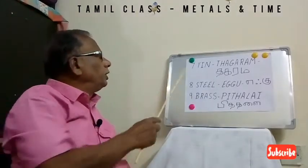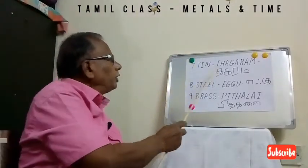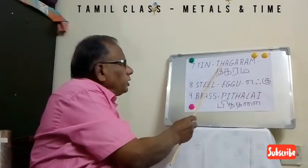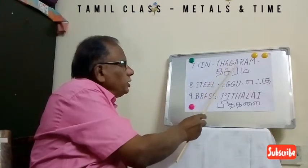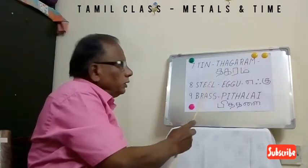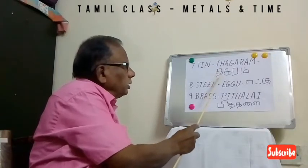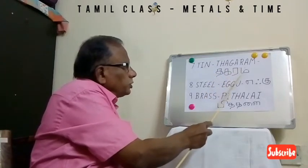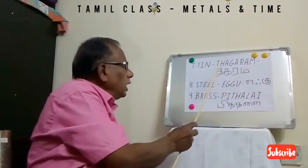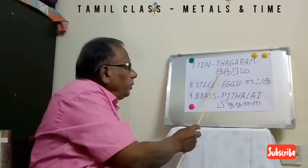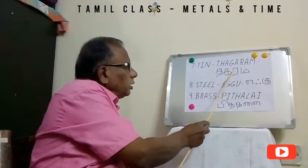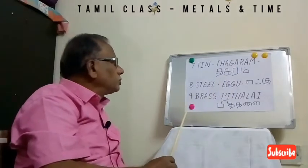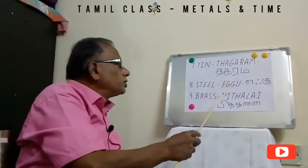The seventh one is Tin. For Tin we call it Tagaram in Tamil — T-H-A-G-A-R-A-M. In Tamil: this is Tha, this is Gha, this is Ra, and this is Im. So it is called Tagaram. Tagaram means Tin.